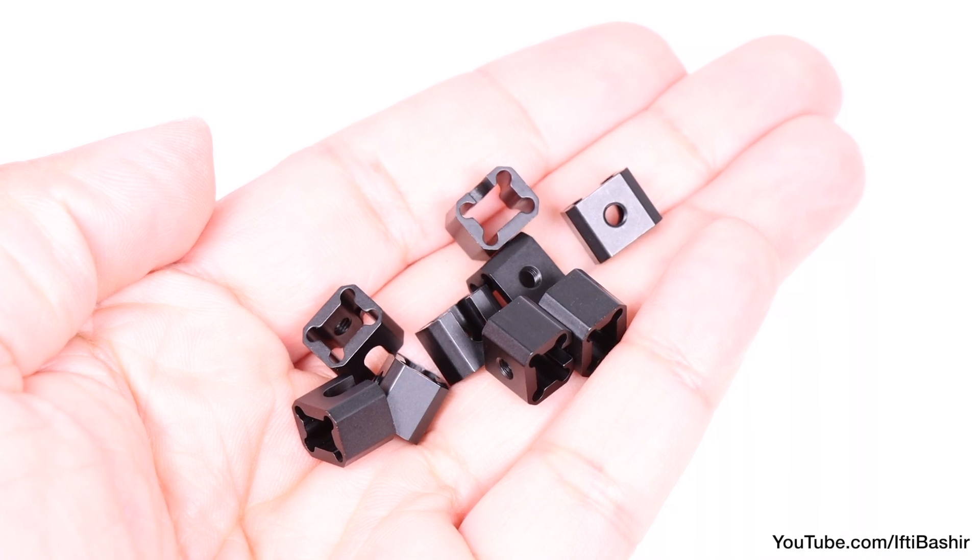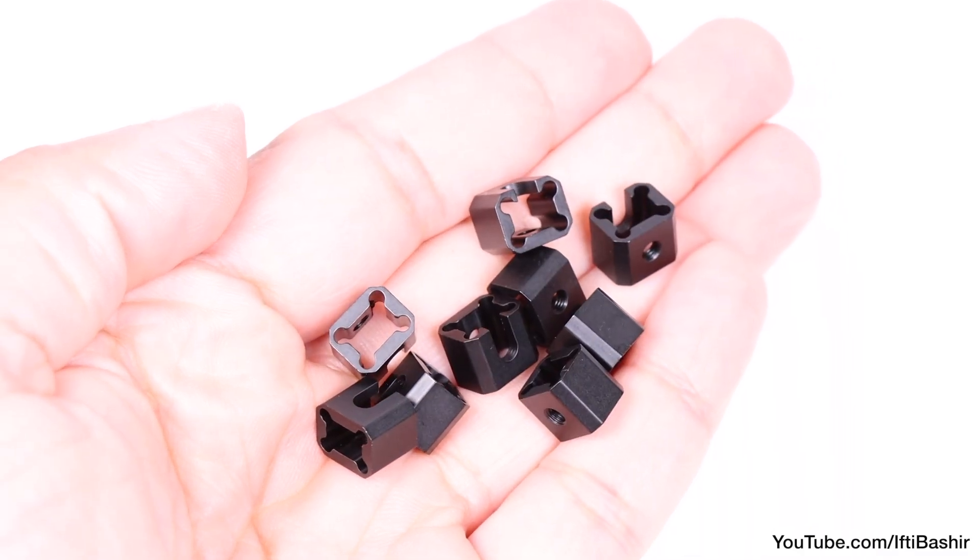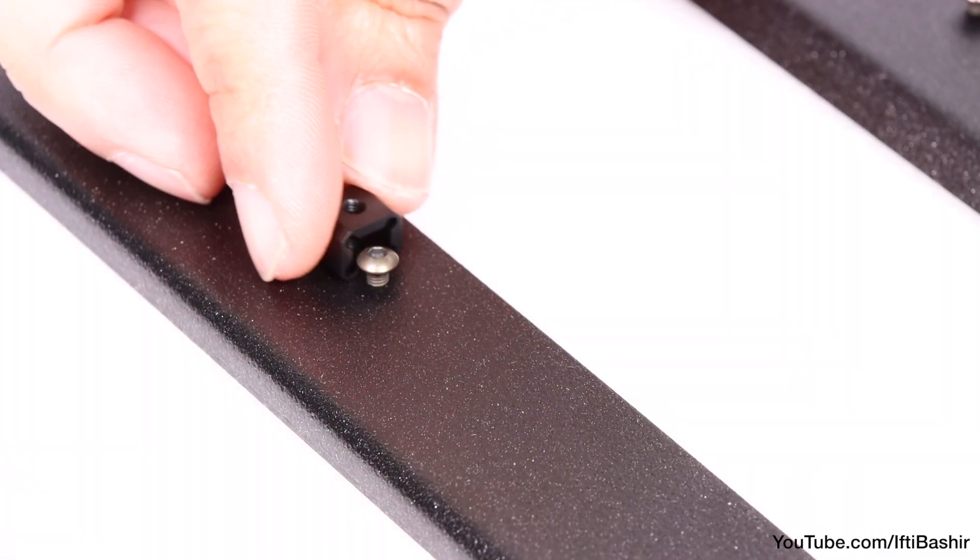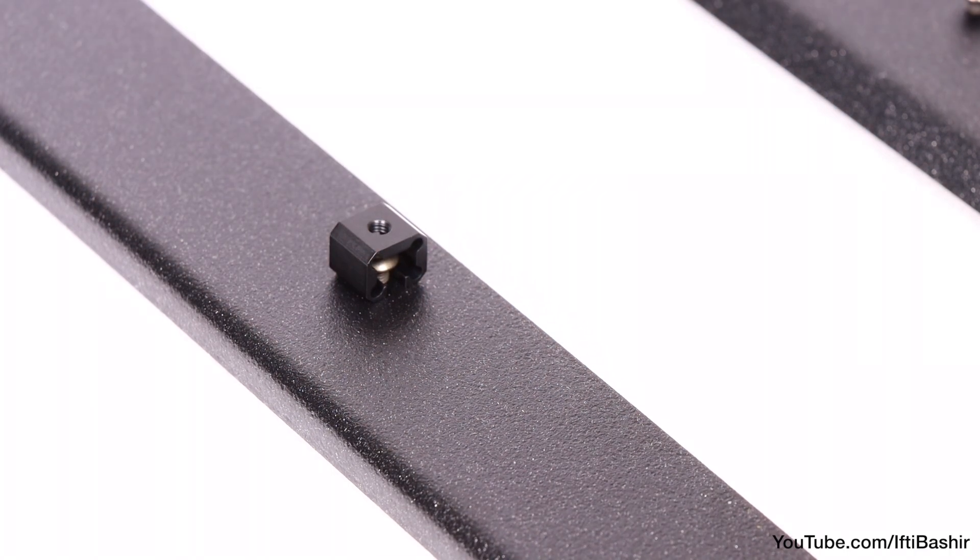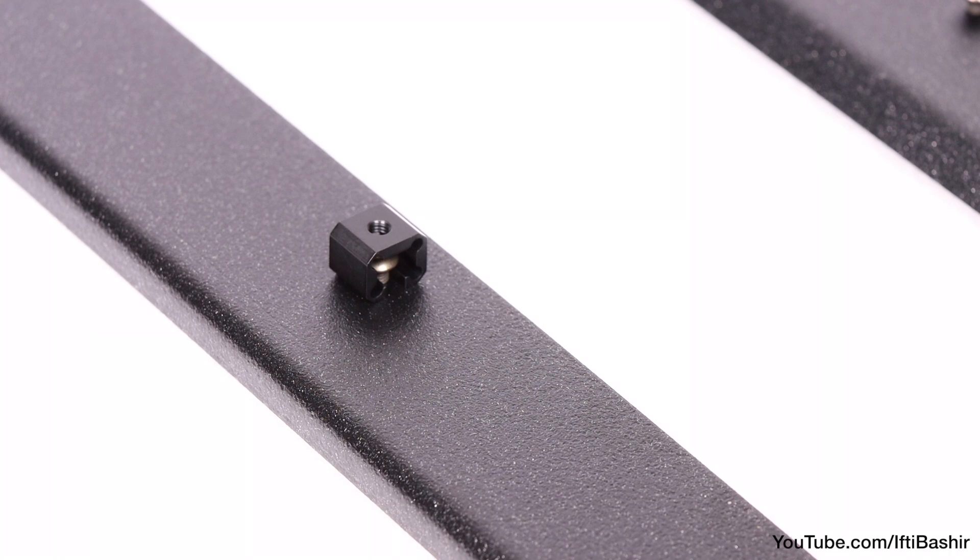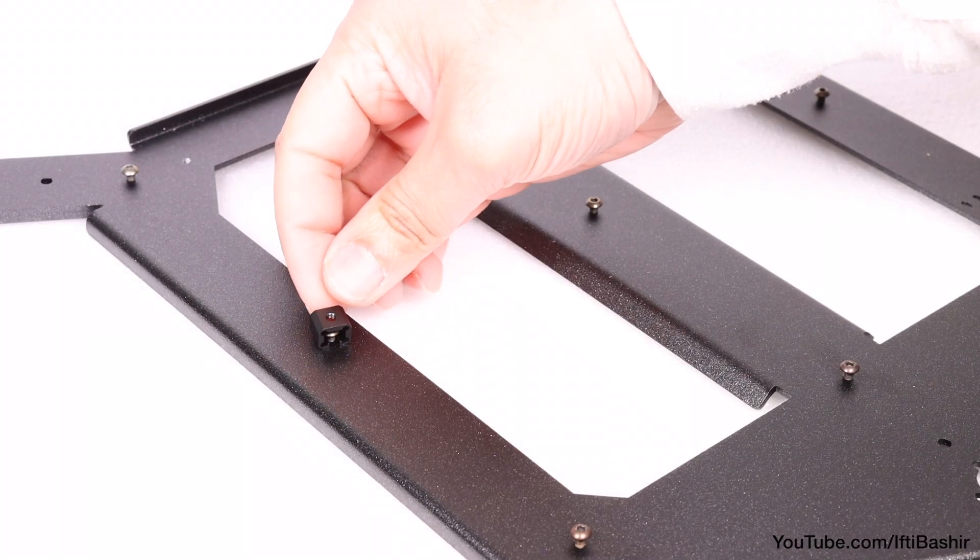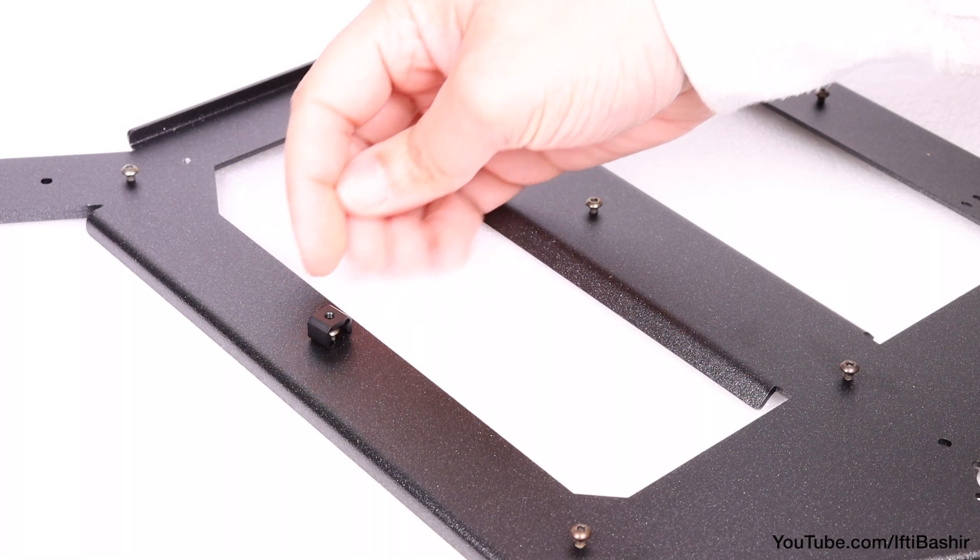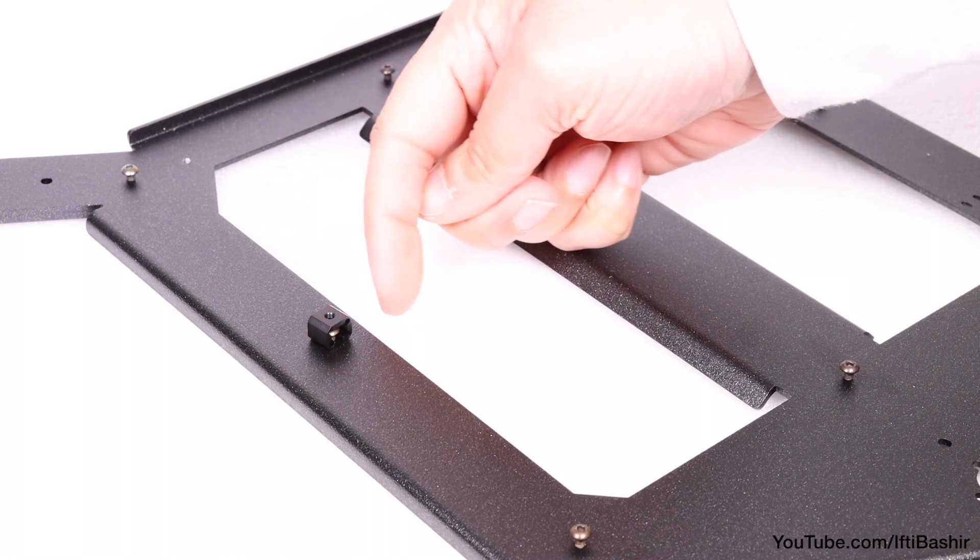We now need to install the eight expansion joints found within the electronics package. These are installed by simply sliding them down over the screw heads, where the lips in the bottom of the joint slide beneath the head of the screw. Before tightening the screws down, however, we need to ensure we get the orientation and position of each expansion joint correct.